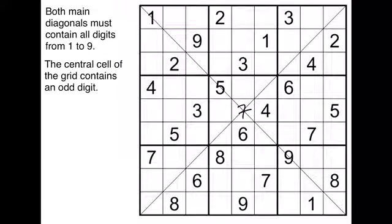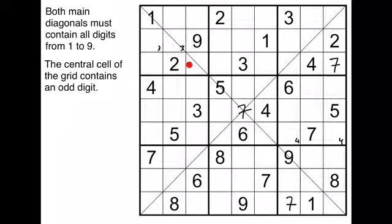Now let's continue the solve. There's a four in one of those cells, a three in one of those cells. There's a seven here — seven on the diagonal tells us the seven is here. This seven on the diagonal puts a seven here. Now with this seven, this seven, and this one, there's a seven in one of those cells — and that covers all four sevens.